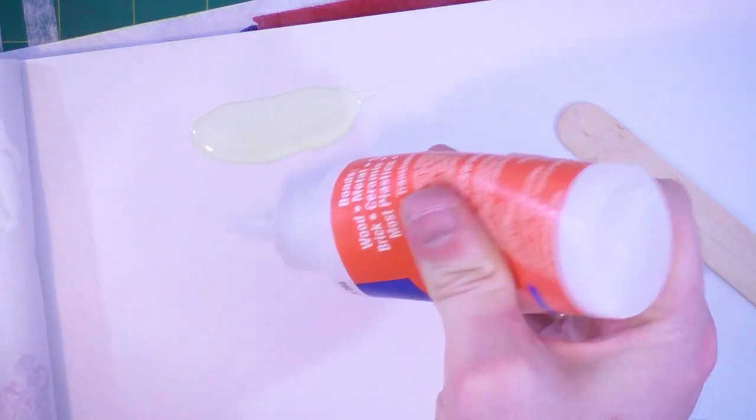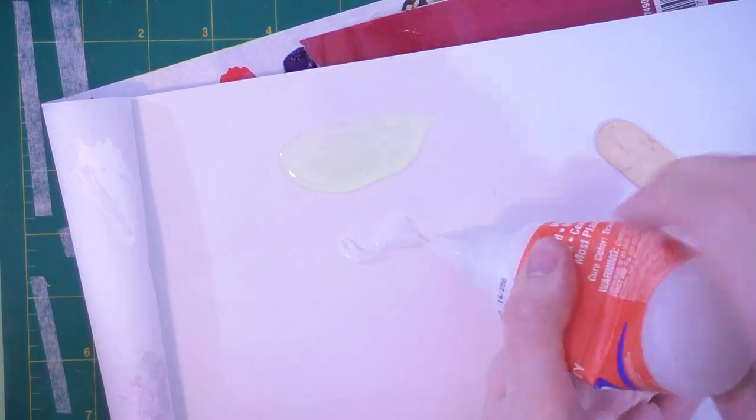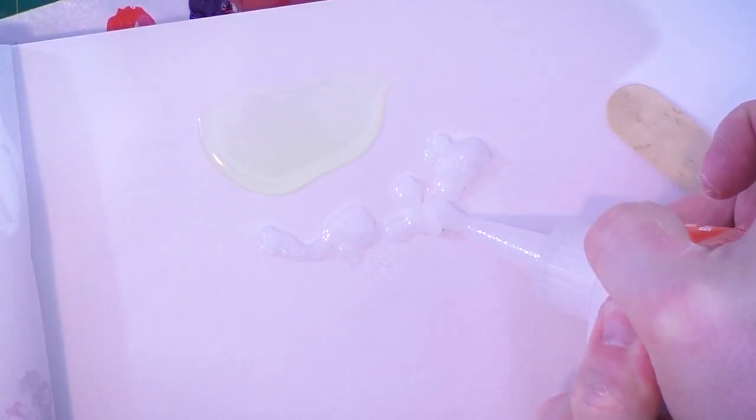I definitely prefer two-part epoxy that comes in two separate tubes that you can squeeze out of. There's kinds you can get where they come in this syringe type thing where you squeeze from both sides at the same time, but I find they never squeeze out the same amount of liquid which gives you an uneven mix.